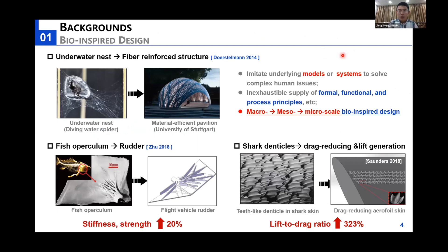In innovative designs, researchers have tried to imitate the underlying models or systems from nature to solve complex human issues, since nature provides us with an almost inexhaustible supply of formal, functional, and process principles. From the macro scale, for example, architects from the University of Stuttgart analyzed and abstracted the construction process of the underwater nest of a spider and developed a fabrication process of fiber-reinforced structures. Here is a material-efficient pavilion they built several years ago.